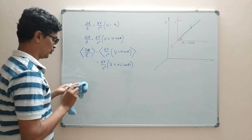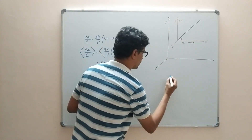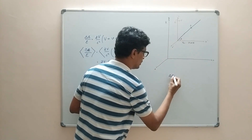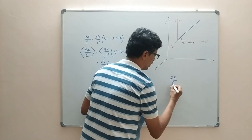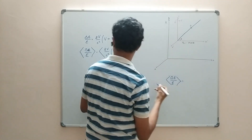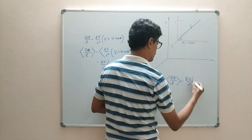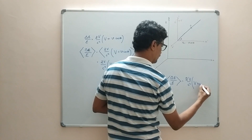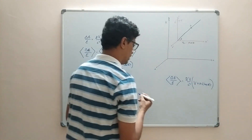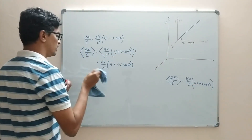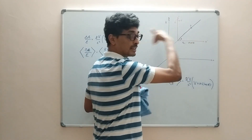Let us write down this equation clearly: ⟨Δε/ε⟩ = (2v/c²)(v + v·⟨cosθ⟩). We now need to find the probability of a particle hitting the scatterer at angle θ.